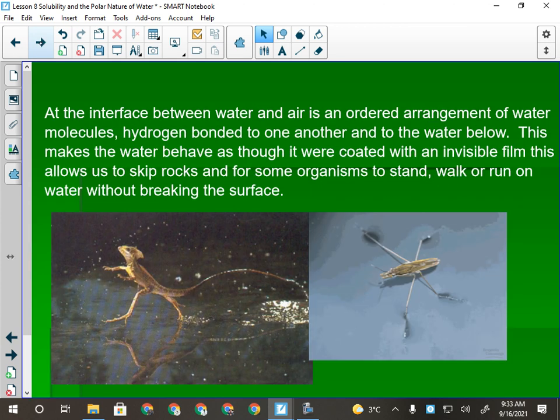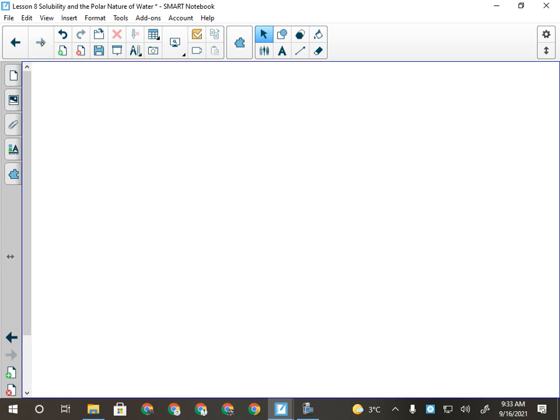There are lots of animals that use the polar nature of water to survive. The Jesus lizard, the one that can run across the water. Same idea, it's just using surface tension, but it has to run really fast, because if it slows down, it'll sink.